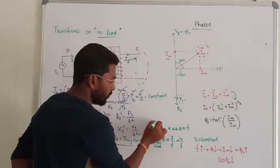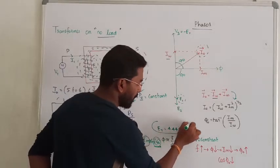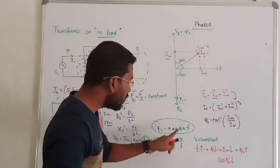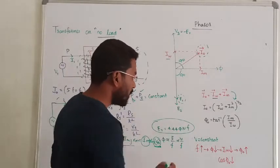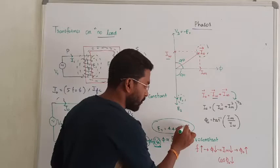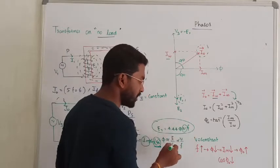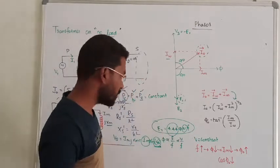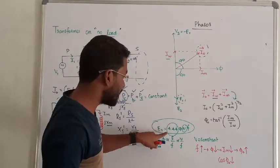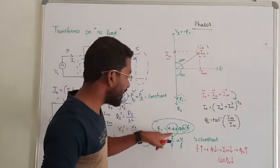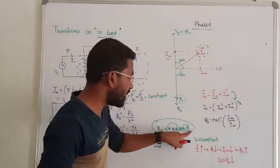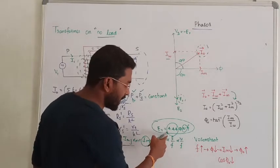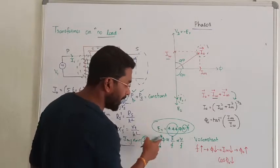The transformer EMF equation: RMS voltage E = 4.44 × f × N × Φ, where N is the number of turns and 4.44 is a constant. From this, we can say E is directly proportional to f·N·Φ, or equivalently, flux Φ is directly proportional to E divided by f.